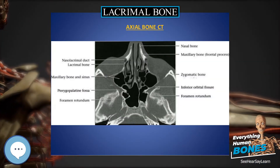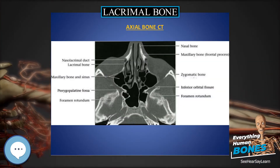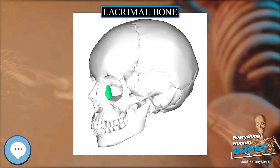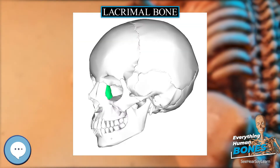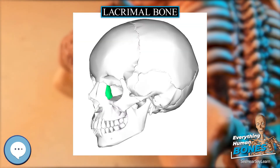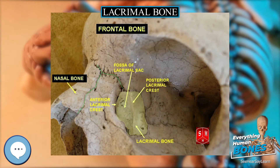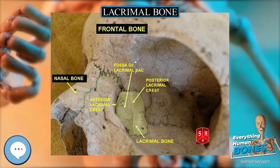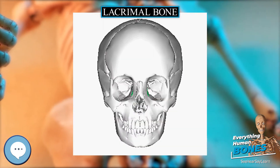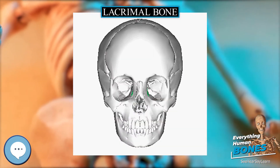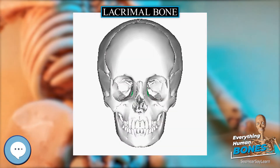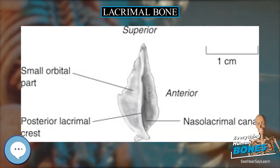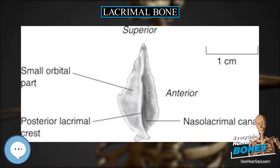The portion behind the crest is smooth and forms part of the medial wall of the orbit. The crest, with a part of the orbital surface immediately behind it, gives origin to the lacrimal part of the orbicularis oculi, and ends below in a small hook-like projection, the lacrimal hamulus, which articulates with the lacrimal tubercle of the maxilla and completes the upper orifice of the nasolacrimal canal.